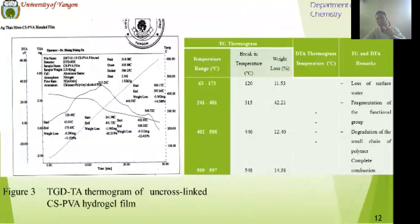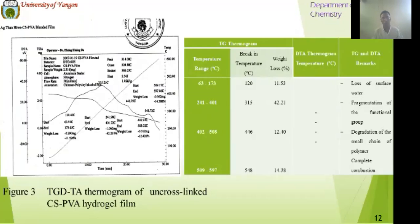The first temperature range, 63 to 173 degrees Celsius, with 7.53 percent weight loss due to the loss of water. The second temperature range, 241 to 401 degrees Celsius, with 42.21 percent weight loss. This is due to the decomposition of functional groups. The third weight loss temperature range, 402 to 508 degrees Celsius, with a weight loss of 12.40 percent, due to the degradation of the small chain of polymer. The fourth degrading temperature range, 509 to 597 degrees Celsius, corresponds to 40.38 percent weight loss due to complete combustion.